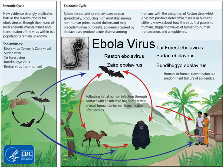When it gets into a human, it causes something called hemorrhagic fever, which is what makes it so dangerous. By January 13th, 2016, approximately 11,315 people had died. Hemorrhagic fever breaks down into two parts: 'hemo' meaning blood, and 'fever' meaning flu-like symptoms. Hosts of Ebola experience massive bleeding, which led to a mortality rate of 25 to 90 percent.